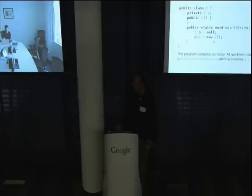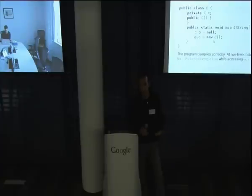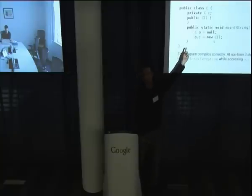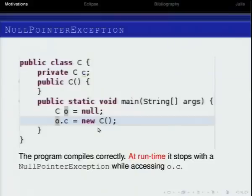So what is nullness analysis? Let's start from what is a null pointer exception. As you know very well, a null pointer exception is a runtime exception in Java. When you try to dereference a null pointer, you get an exception — the program stops or at least an exception is raised. This happens when some variable contains null and then you call a method or access a field. And this is not a nice situation.